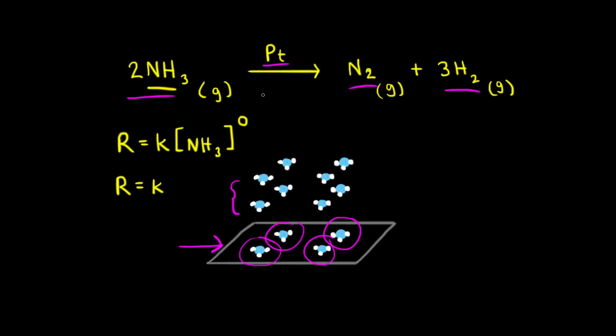Normally, increasing the concentration of a reactant increases the rate of the reaction. However, for this reaction, since we're limited by the surface area of the catalyst — if the catalyst is already covered with ammonia molecules — increasing the concentration of ammonia will have no effect on the rate. Therefore, the decomposition of ammonia on a hot platinum surface is an example of a zero order reaction.